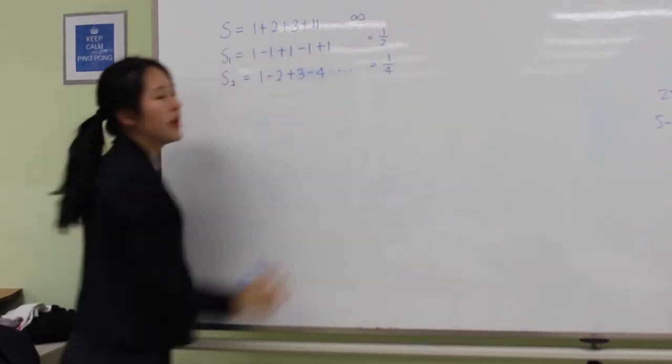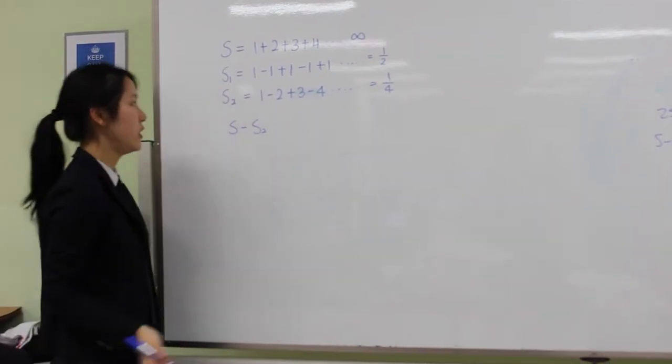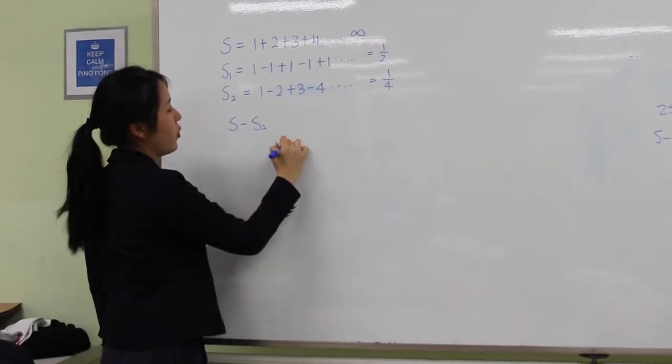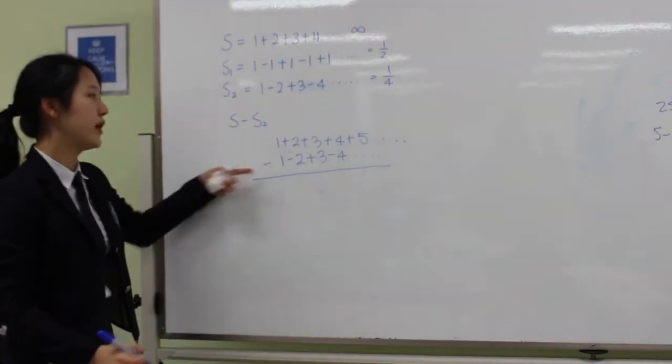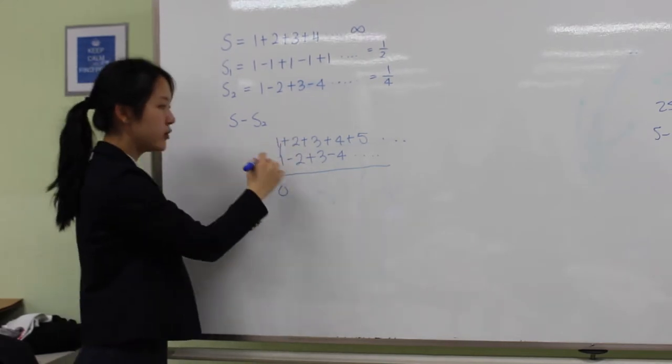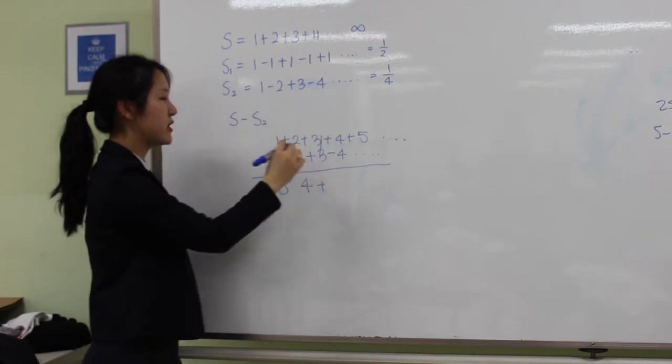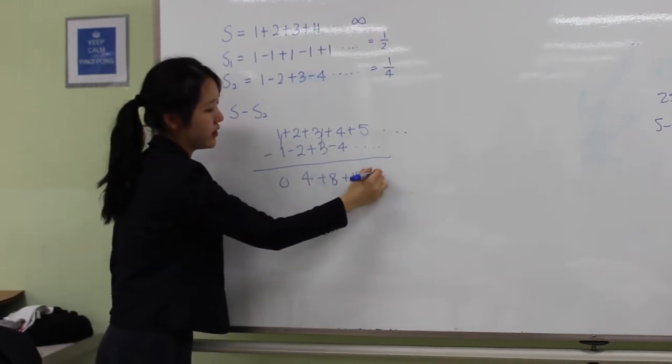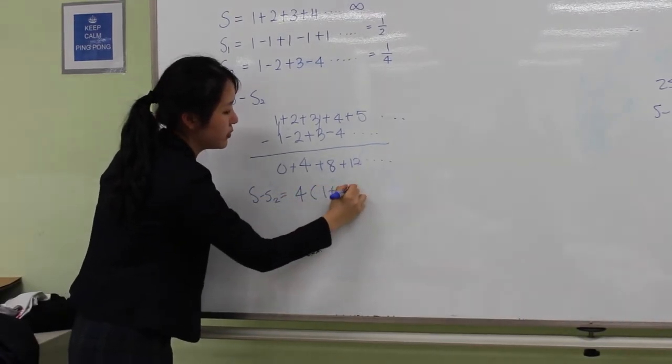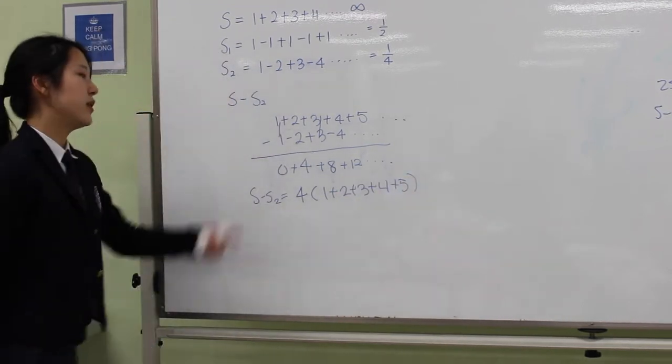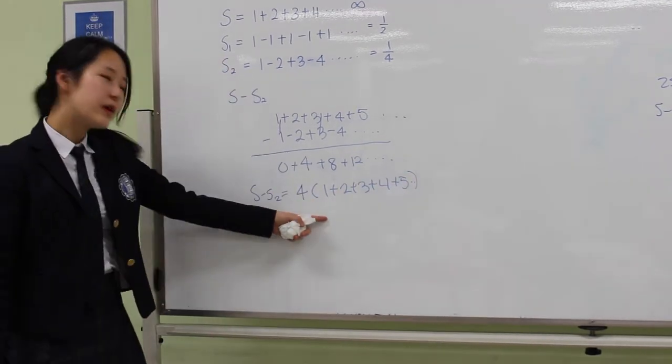So, now I'm going to erase this equation and come up with a new equation. 1 and 1 cancels and becomes 0. 2 minus 2 equals 0. 3 cancels out. So this continues. We can factor out 4 and write it also as S minus S2 equals 4 times 1 plus 2 plus 3 plus 4 plus 5. Now, isn't this familiar? Yes, this is S.